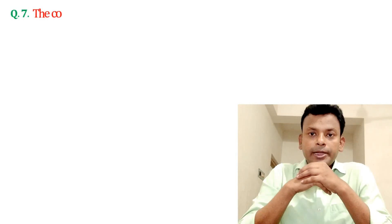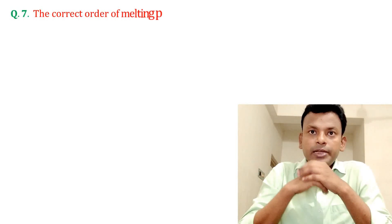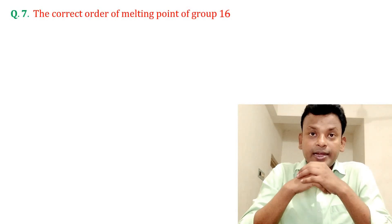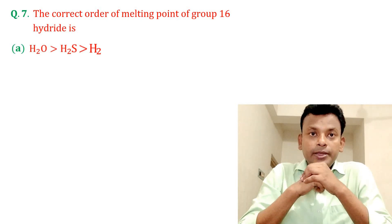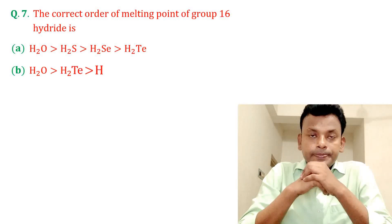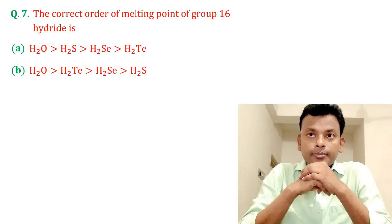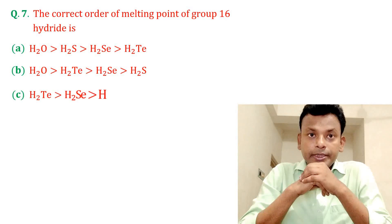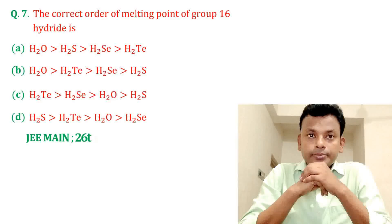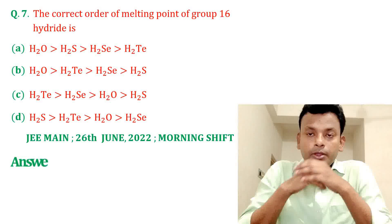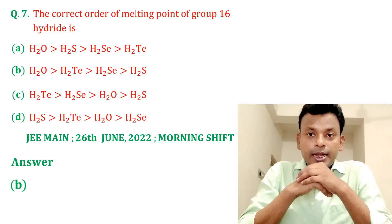Question number seven: the correct order of melting point of Group 16 hydrides. Options A, B, C, and D are given. Answer: option B is the correct answer.